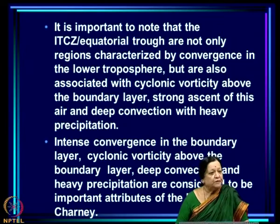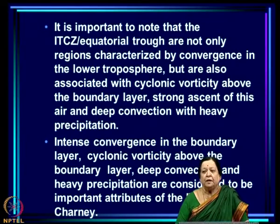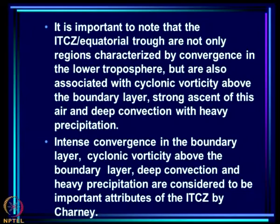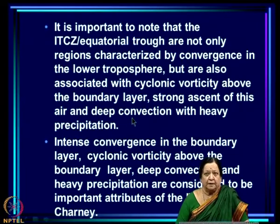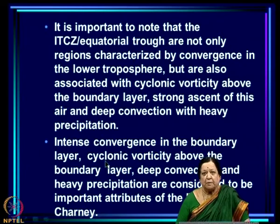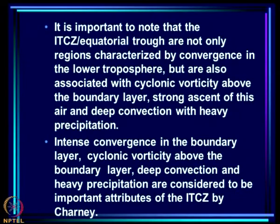The important attributes of the ITCZ are: strong cyclonic vorticity above the boundary layer, convergence within the boundary layer toward this region, strong upward velocity or ascent above the boundary layer extending almost throughout the troposphere until about 200 millibars, anticyclonic vorticity and divergence at that upper level, and then descent in the surrounding region completing the circulation. Intense convergence in the boundary layer, cyclonic vorticity above the boundary layer, deep convection and heavy precipitation are considered very important attributes of the ITCZ by Charney.